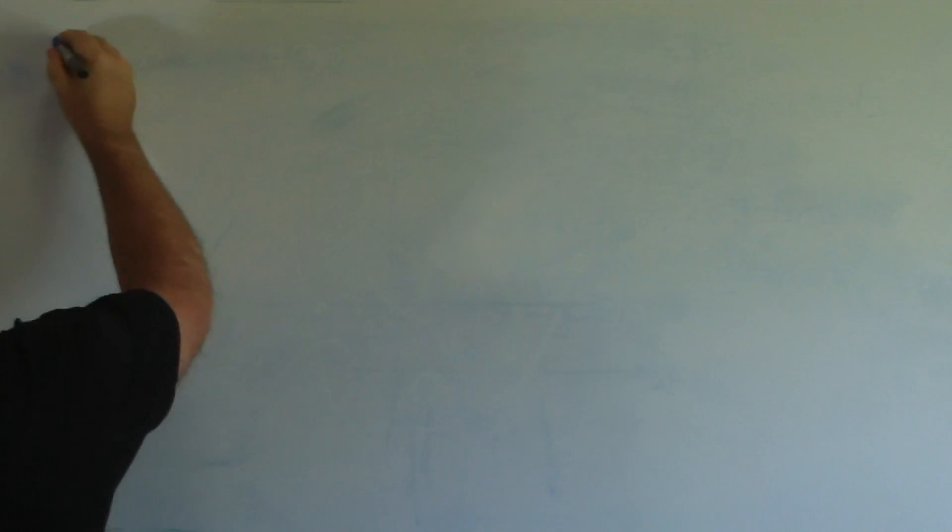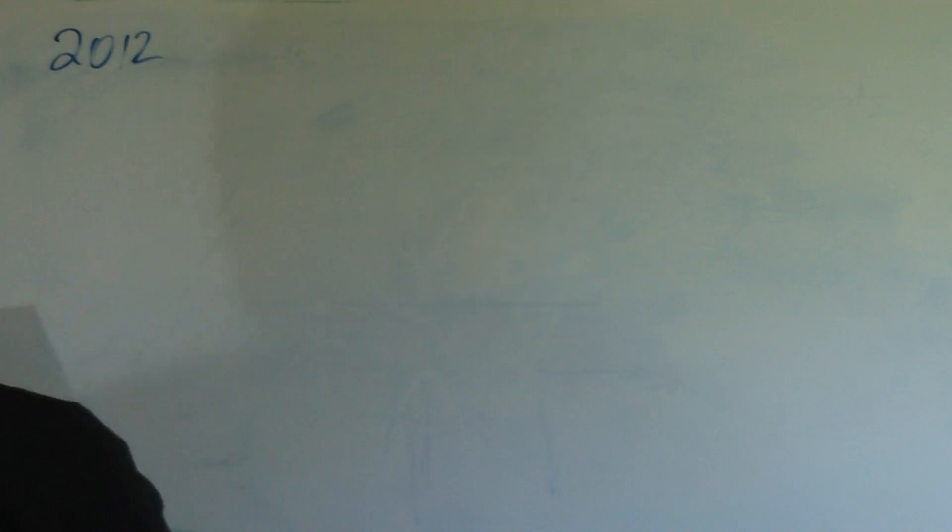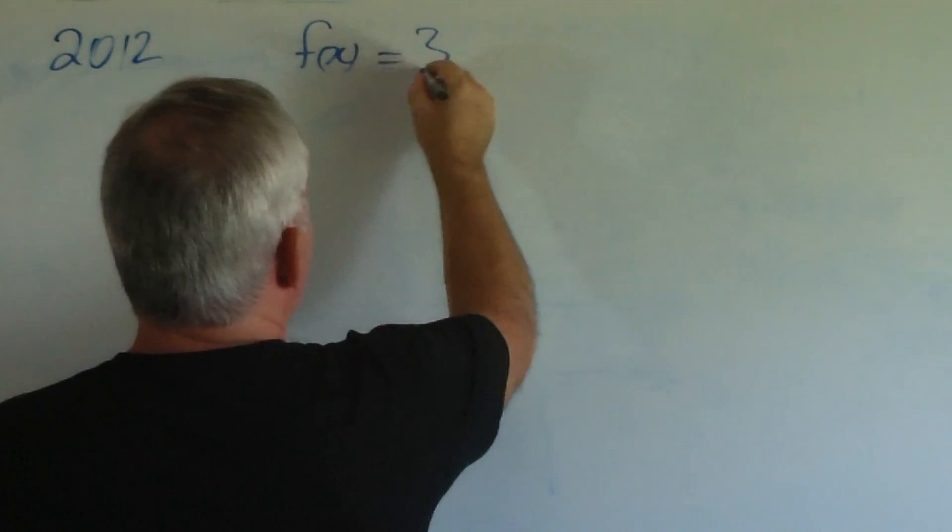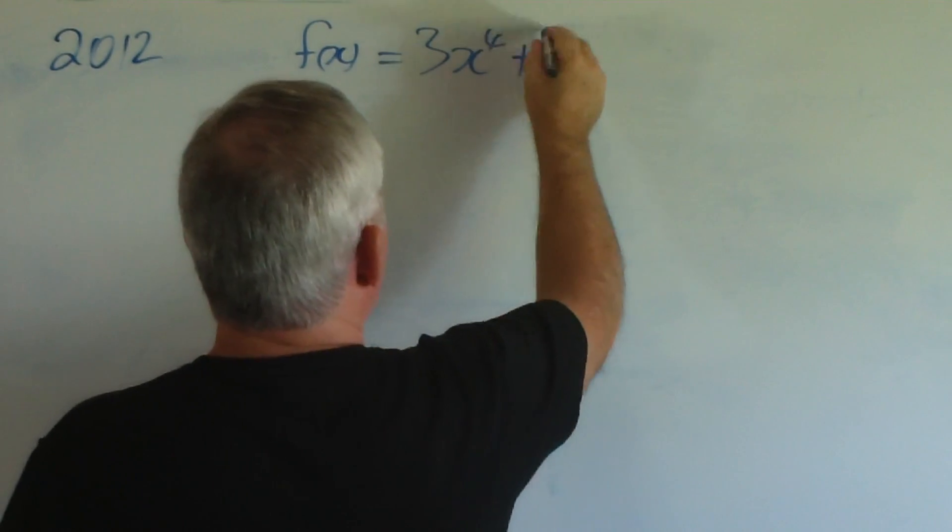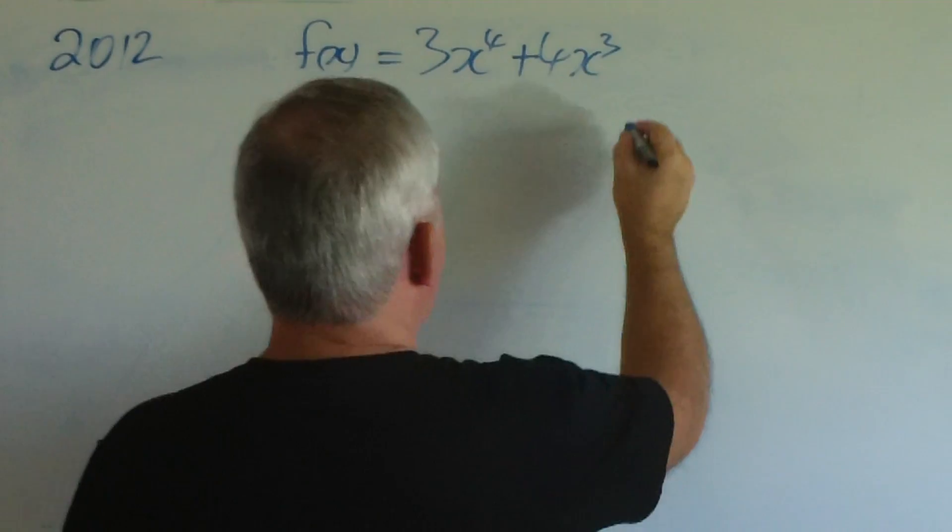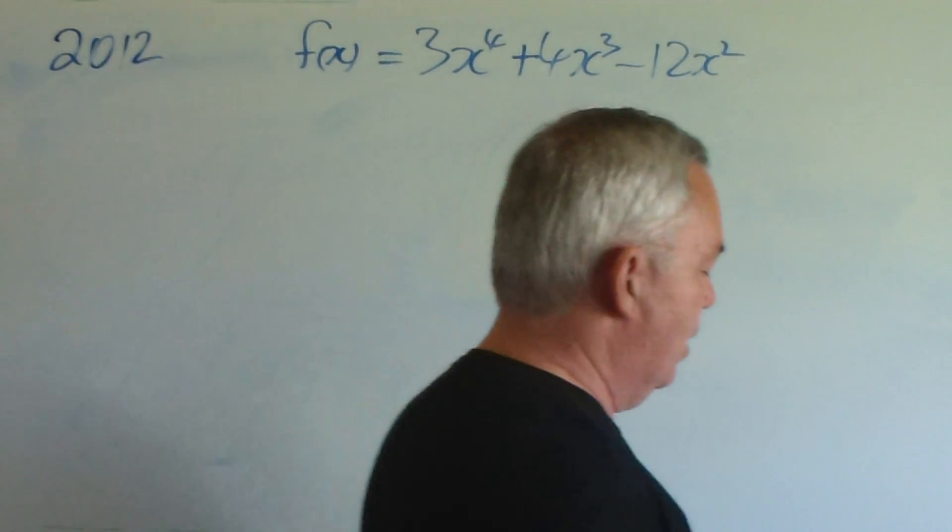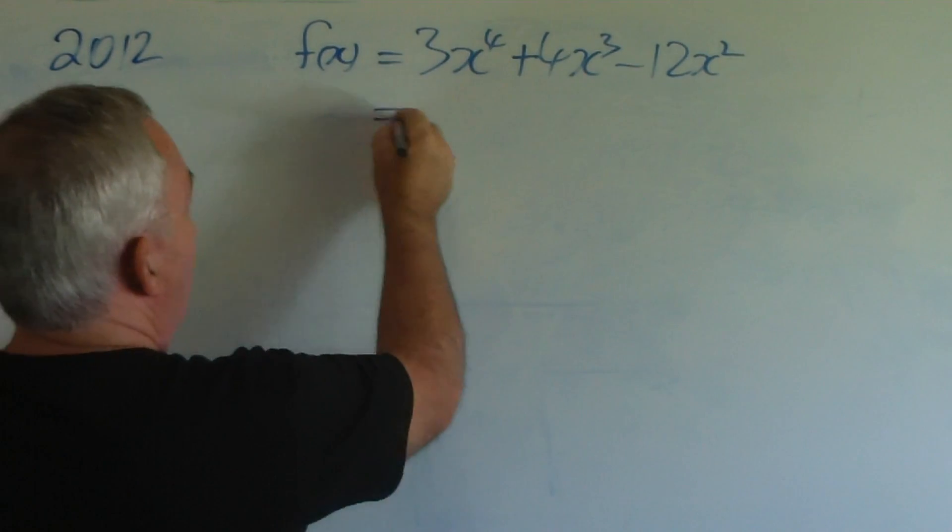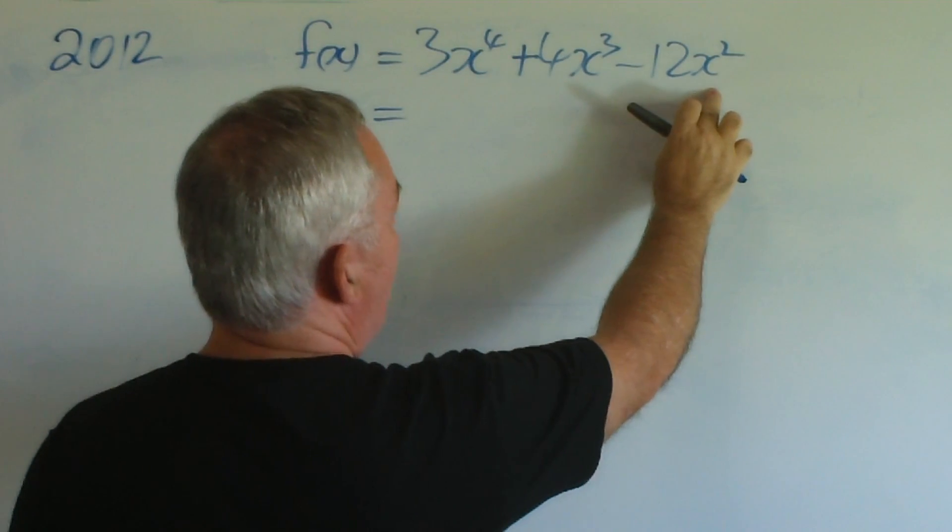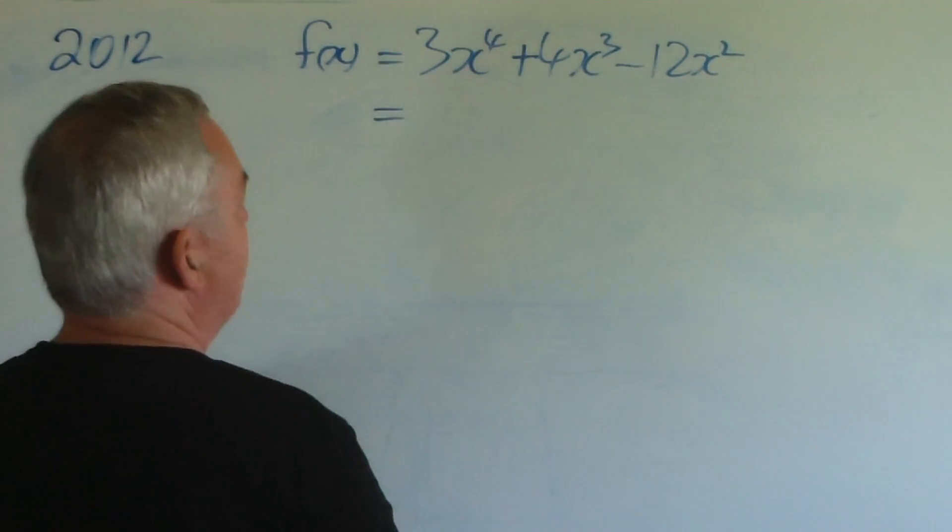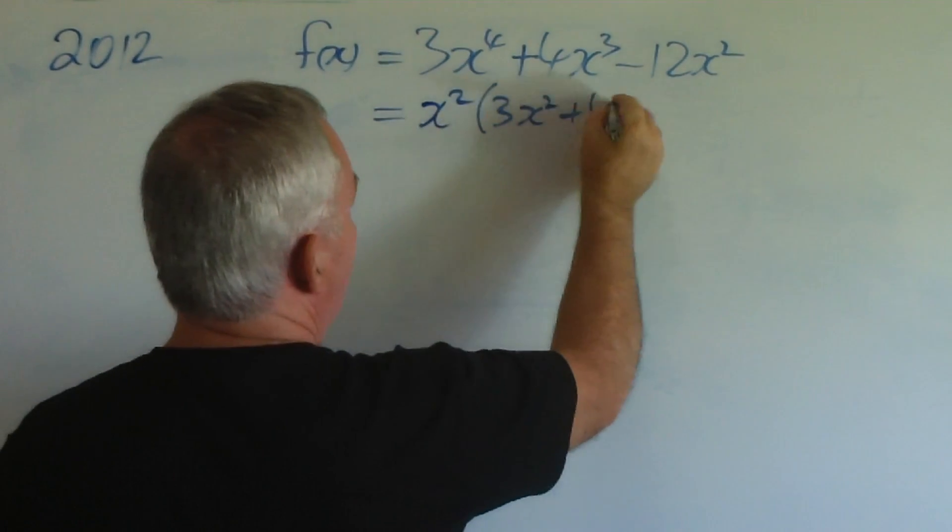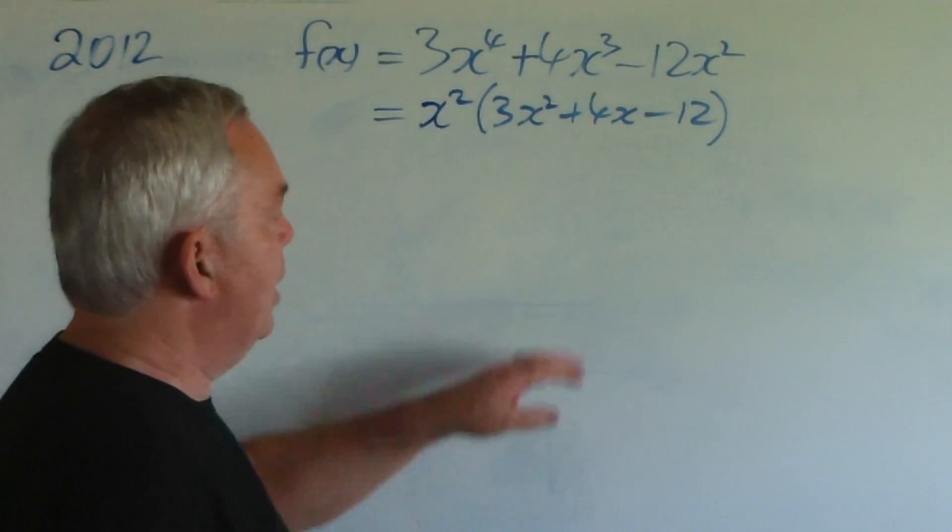And finally, I just looked up on the internet for 2012. I forgot to write down which question it was. But the function was 3x⁴ + 4x³ - 12x². You can see this is rather more complex than any of the preceding ones. Certainly, x² is a common factor. There is no common numerical factor. So, we take x² out and we now have a quadratic.